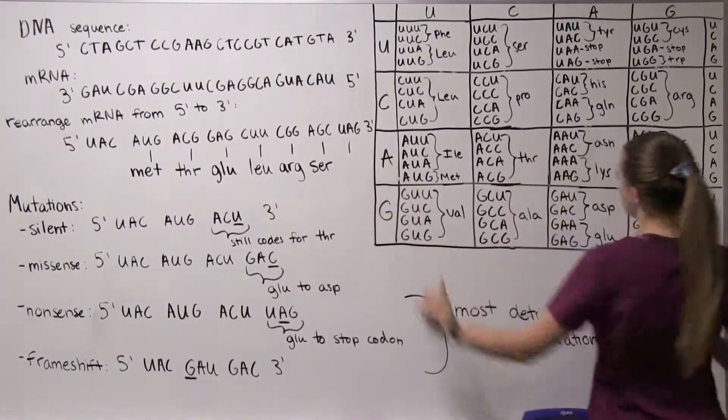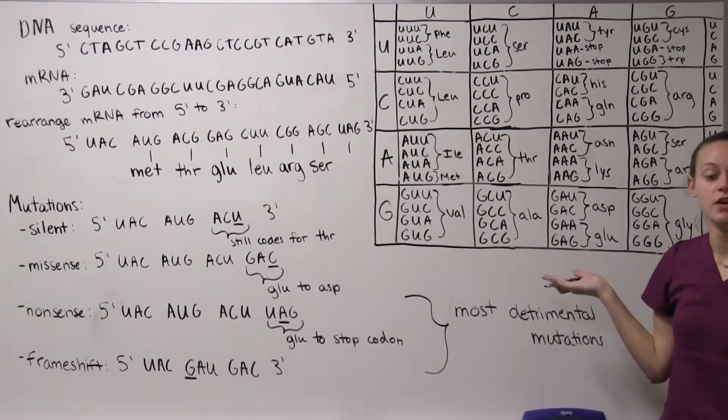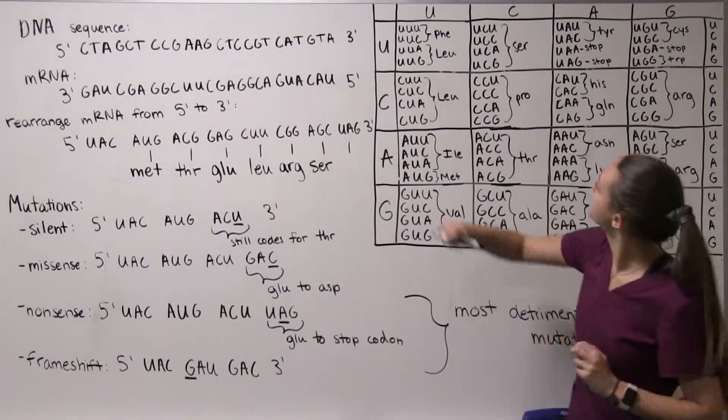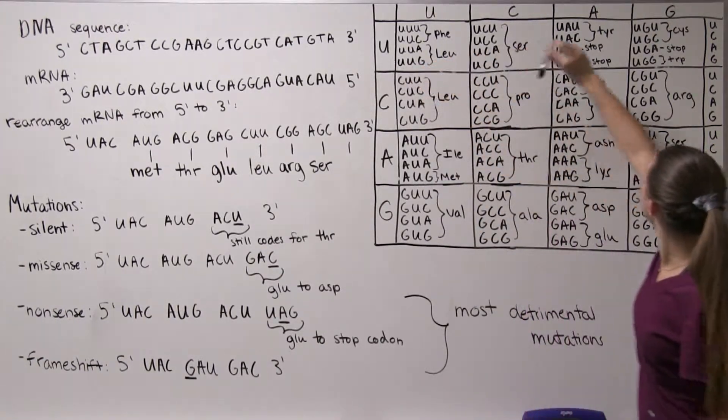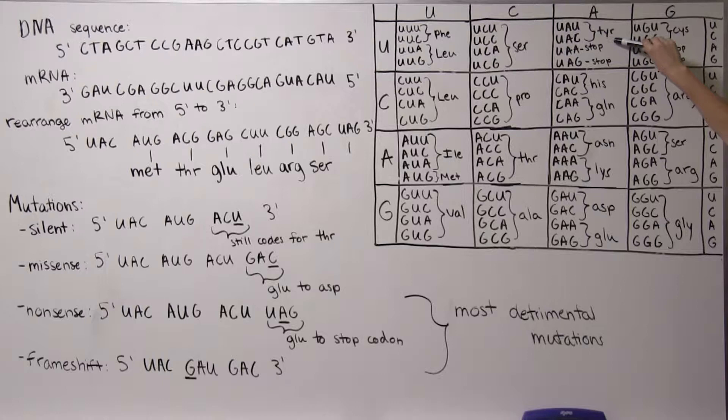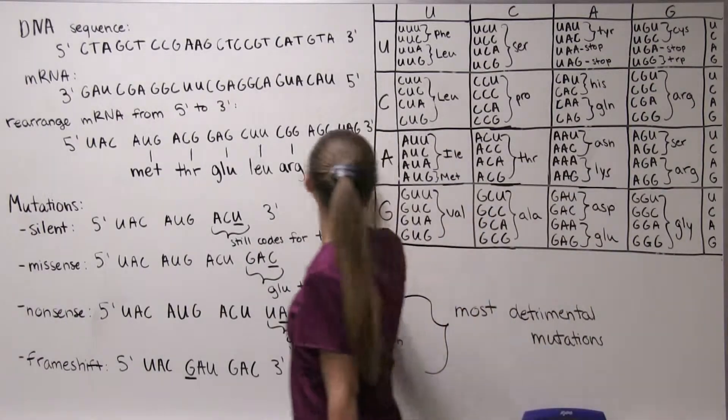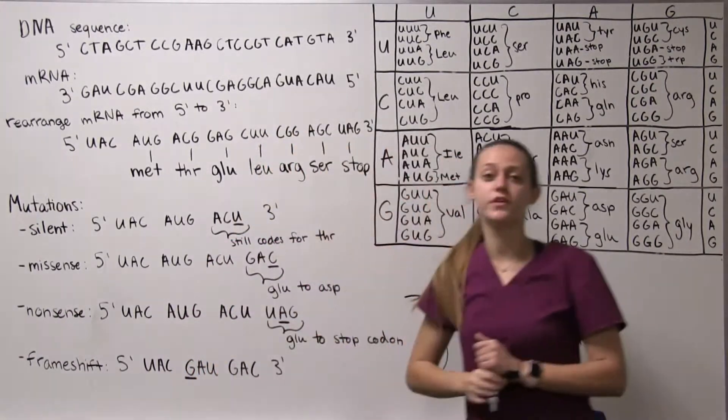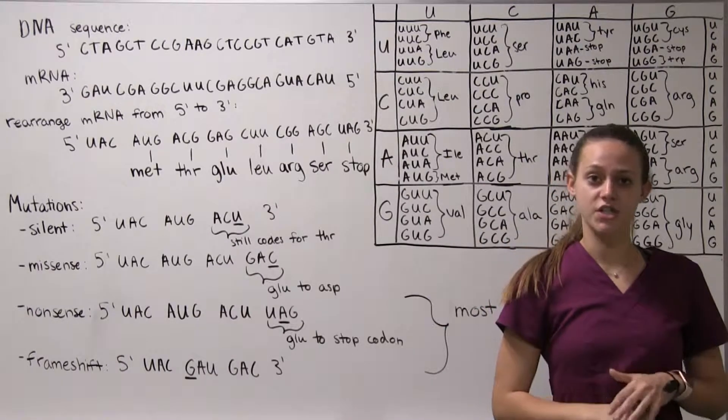And lastly we have UAG, you can probably already recognize this as a stop codon but we'll still go through it so you have U and then we go over to A here and then UAG here is a stop codon. And stop codons don't code for an actual peptide they just stop the sequence.